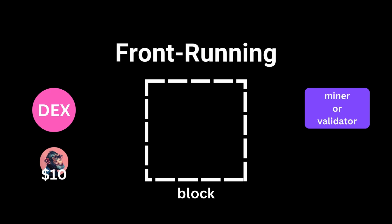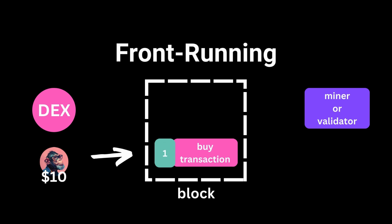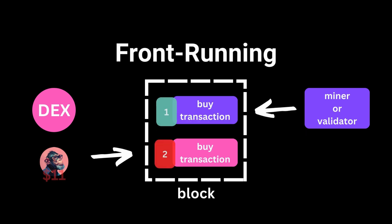Jumping ahead of your transaction, known as front-running, happens when an attacker sees your transaction in the queue and places their own before yours. For example, if you're buying a token at a specific price, the attacker can buy it first, driving up the price, and then sell it back to you at a higher rate. They profit and you pay more.